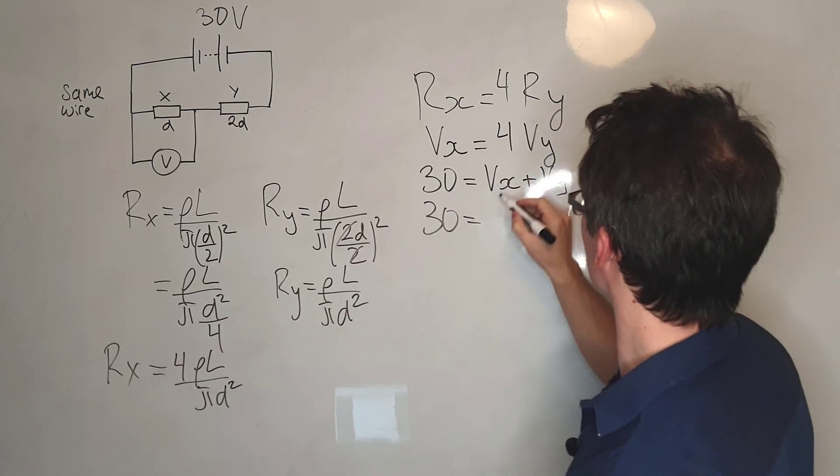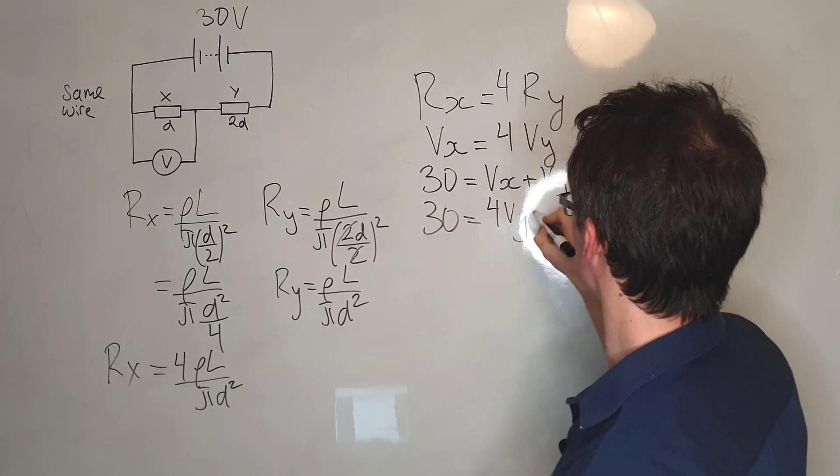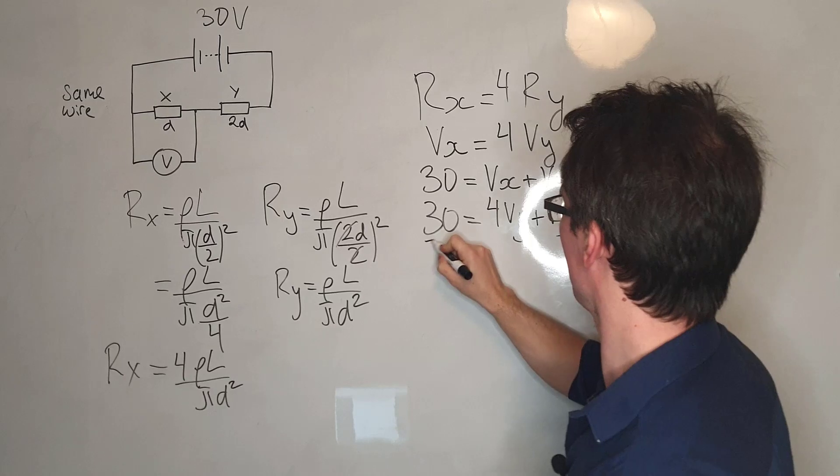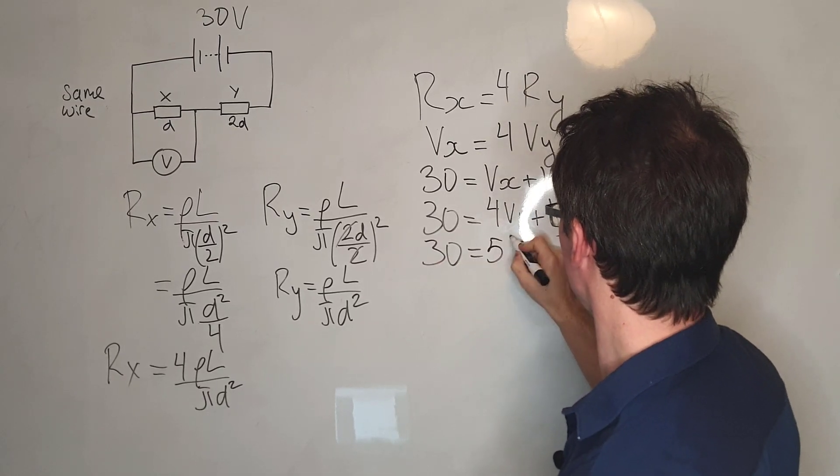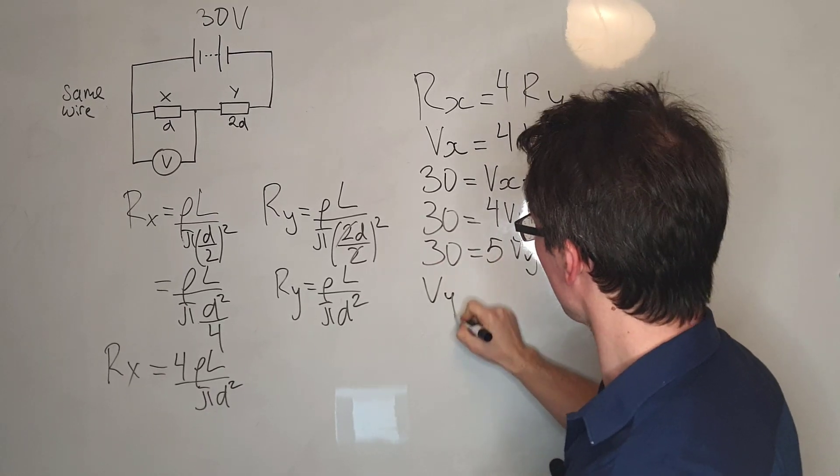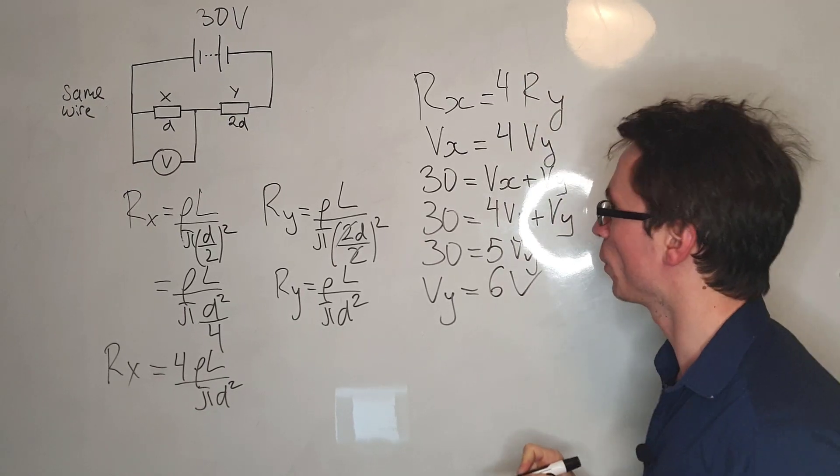In other words, 30 will be equal to 4 times Vy plus Vy. 30 will be equal to 5 times Vy. The voltage across Y will be equal to 6 volts.